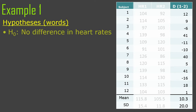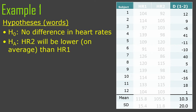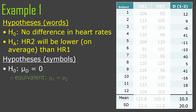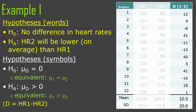Our hypotheses in words: the null hypothesis is there's no difference in heart rates, and the alternative hypothesis is that heart rate 2 will be lower on average than heart rate 1. In symbols, mu of d equals zero — equivalently we could say mu 1 equals mu 2. And the alternative hypothesis, mu of d is greater than zero. This is all dependent on all of our differences being calculated as heart rate 1 minus heart rate 2.